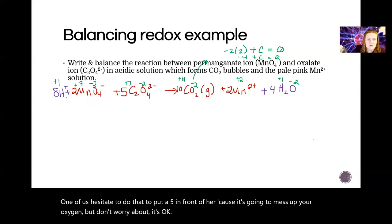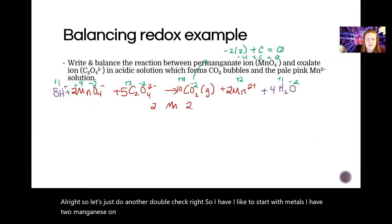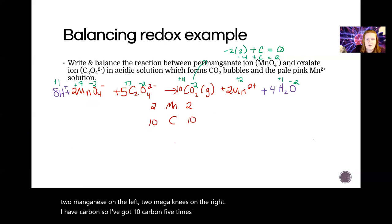All right, so let's just do another double check, right. So I have—I like to start with metals. If two manganese on the left, two manganese on the right. I have carbon, so I've got 10 carbon, five times two, and I've got 10 carbon. So far so good.